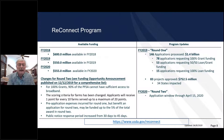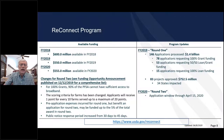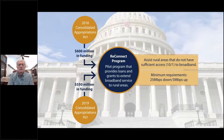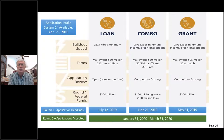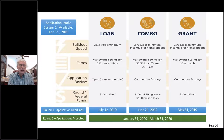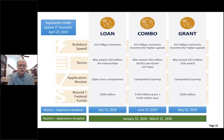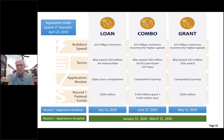We also have another program called the ReConnect Program. It's been around a couple of years and is very popular. It's had around $600 million available in rounds one and two, and round three is about to happen. The ReConnect Program brings money through Appropriations Acts and the CARES Act to provide service in three packages: a pure loan, a combination loan and grant, and a pure grant. Each one has had around $200 million available. Round one applications have been completed and announced, round two is getting started, and round three will have an application window sometime this spring.